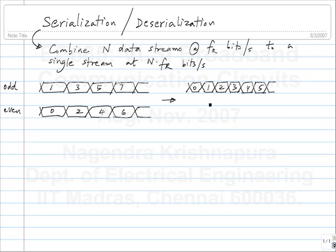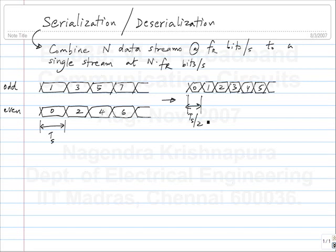If the bit period of each input stream is Ts, the output bit period is Ts by 2. So how do we do this? One approach is a multiplexer clocked at twice the input data rate.